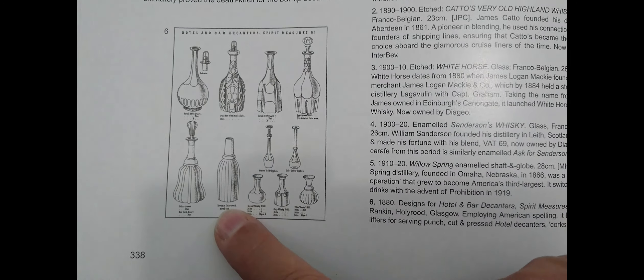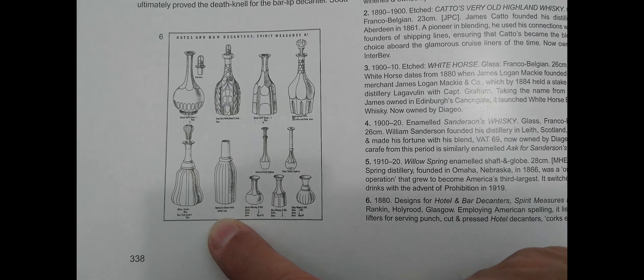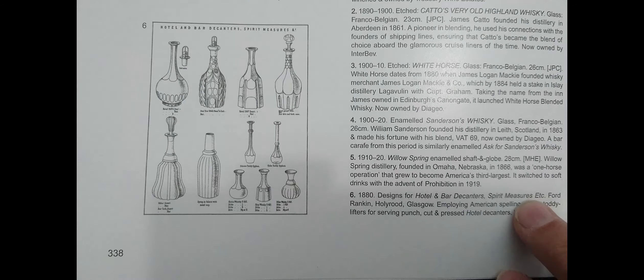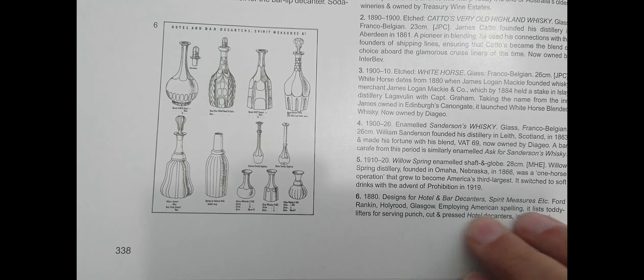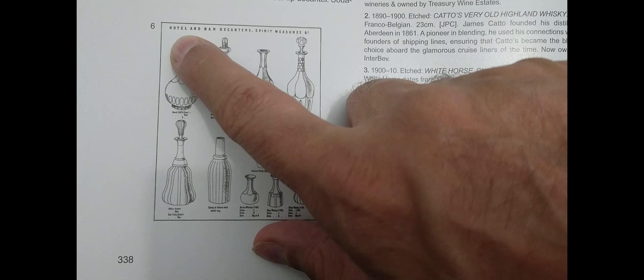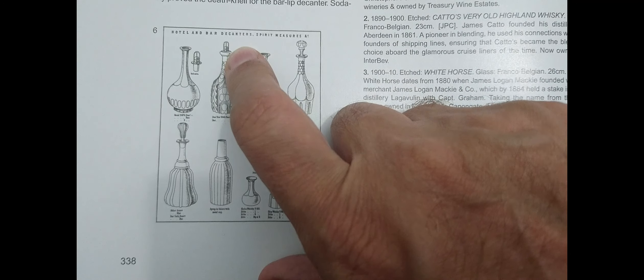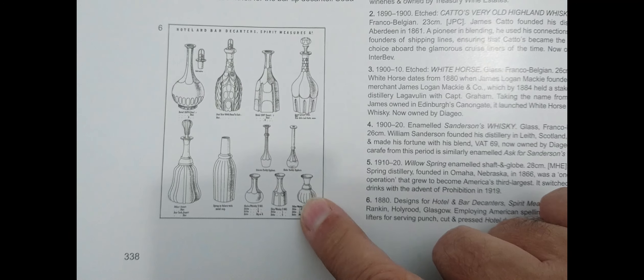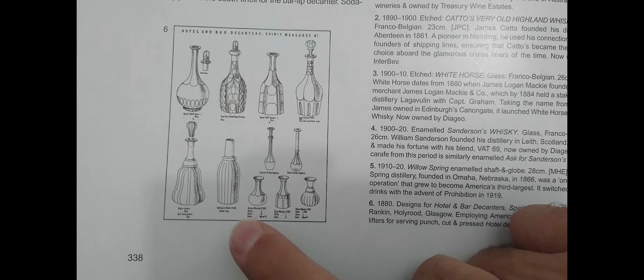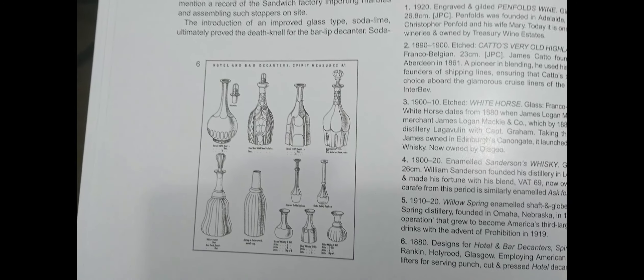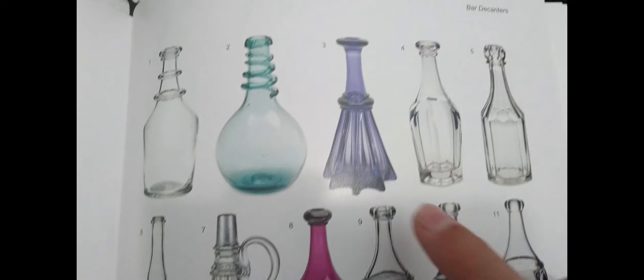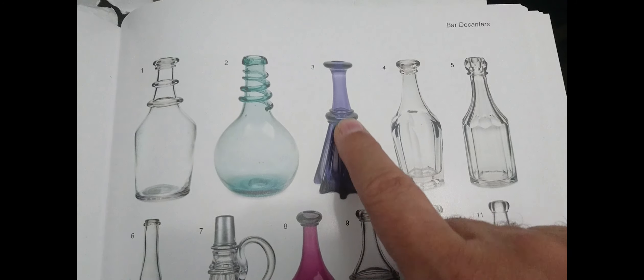He describes this as a syrup in colors with metal cap. This is from Scotland as well, so Forward Ranking Hollywood Glasgow, and it's for hotel and bar decanters and measures, just like the one we were looking at yesterday.